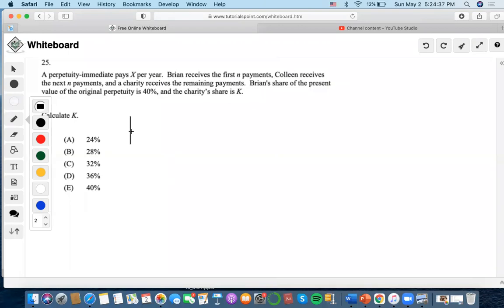The thing that we have to think about here is that we know Brian receives the first N payments, and then Colleen receives the next N payments, so that would be denoted to 2N. And then charity receives the remaining payments.